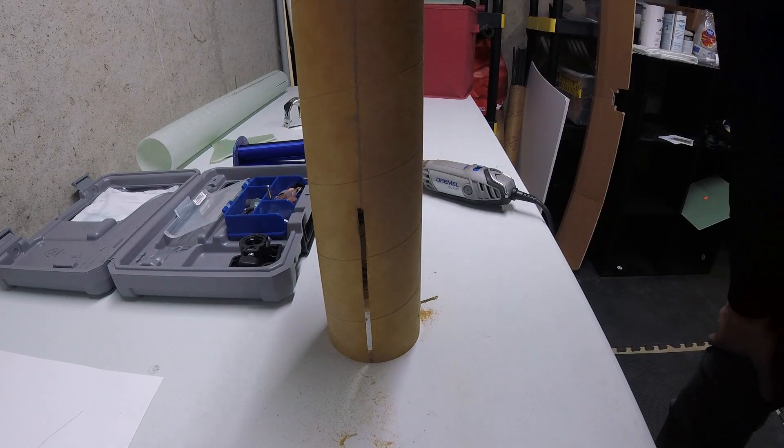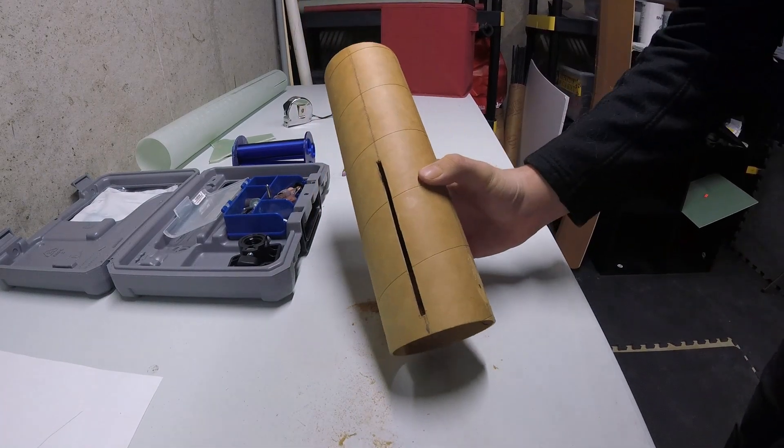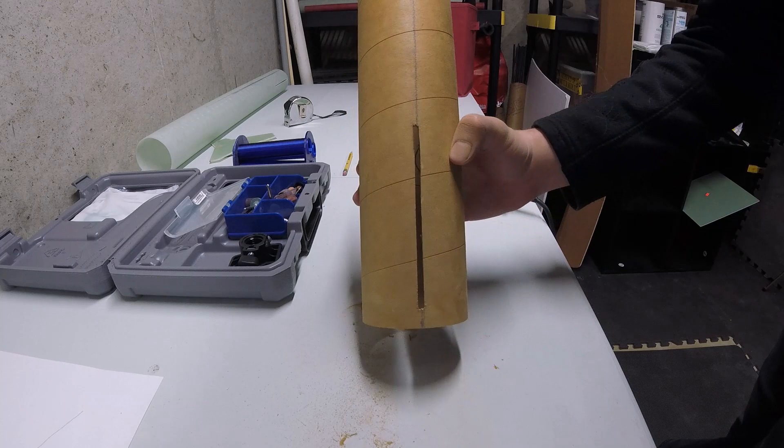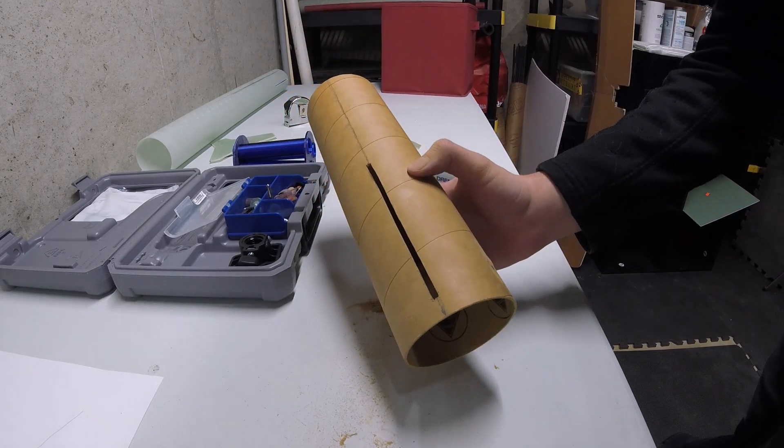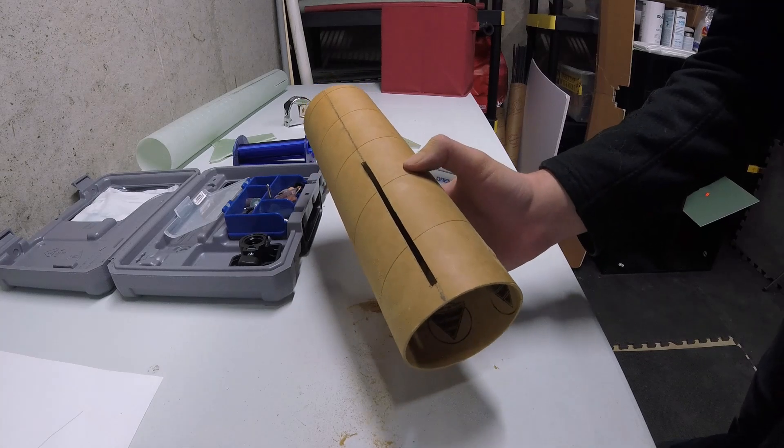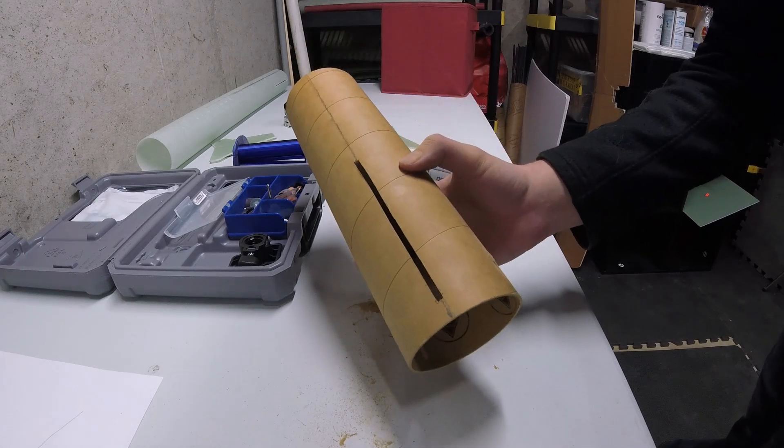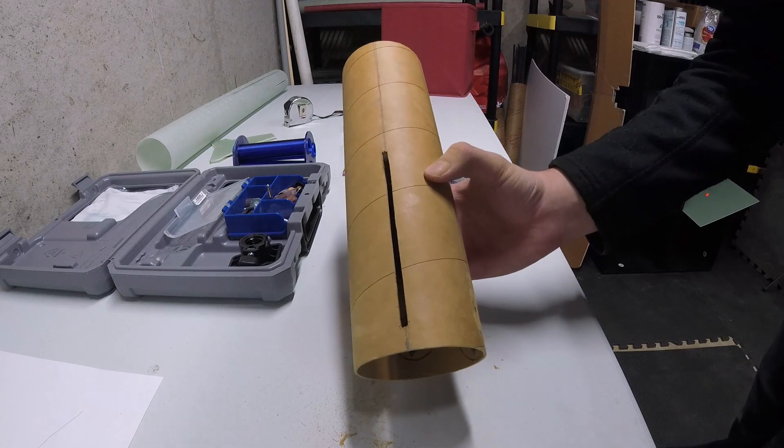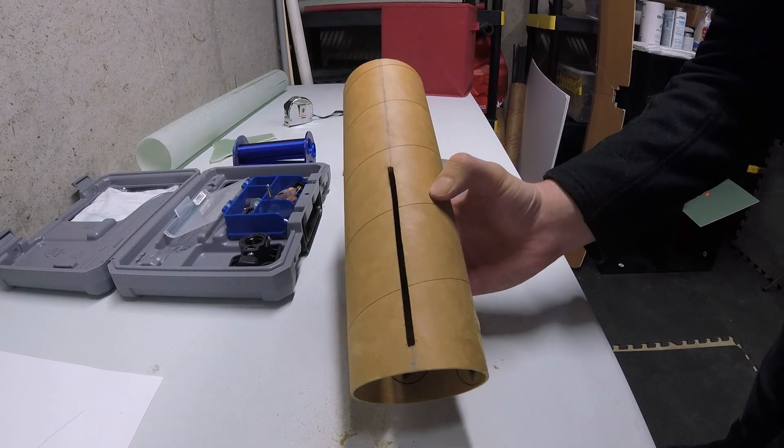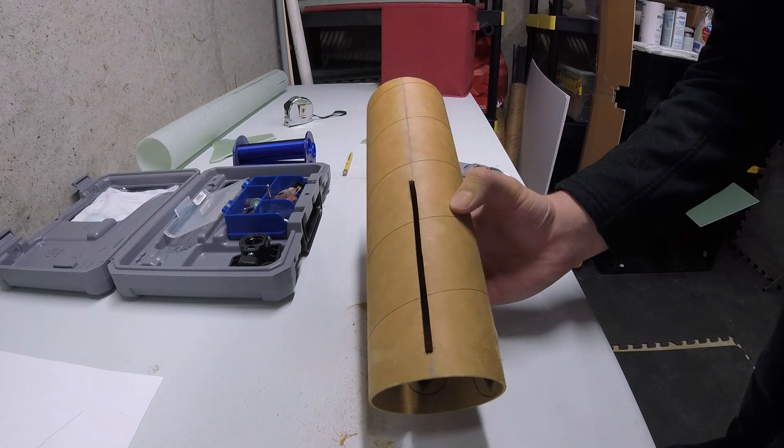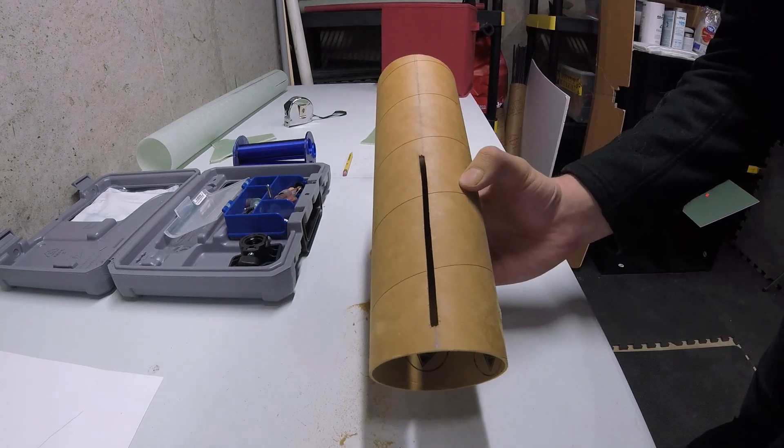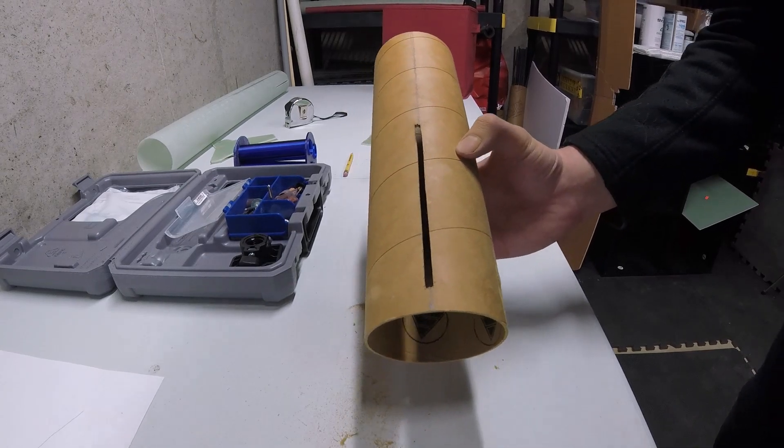Now I've also got a video on how to find the center of any circular object, whether fiberglass or wood, for your bulkheads or centerings if you're making those from scratch. Check that out—there will be a link in the description below. Also check me out on Facebook and at my website. There's always more content at either of those places. Thanks for watching, gang.